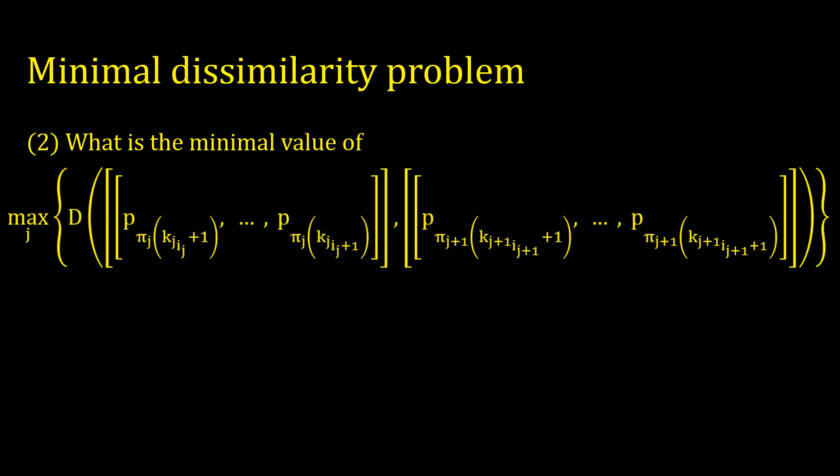The second question we can ask is how do we choose the arrangements so that the maximum of the dissimilarities of the consecutive arrangements is minimal. This is an important question to ask, because how smoothly a competition runs will be primarily determined by the least smooth parts of it.